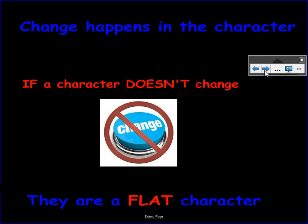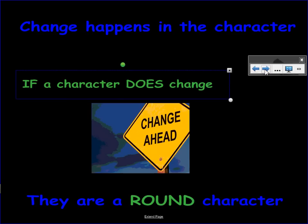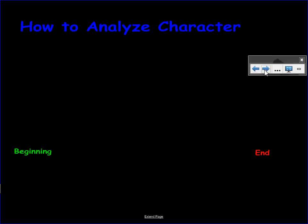If a character doesn't change, that's what we call a flat character. So, that's just kind of a literary term that we use. Flat character doesn't change. Maybe they're a minor character. Maybe they just don't change at all. If a character does change, then it's a round character. So, flat and round. If it changes, it's a round character. Just some terms to use.